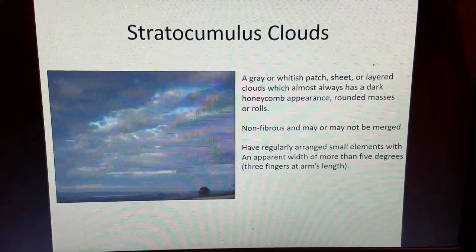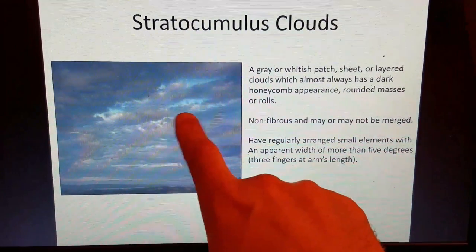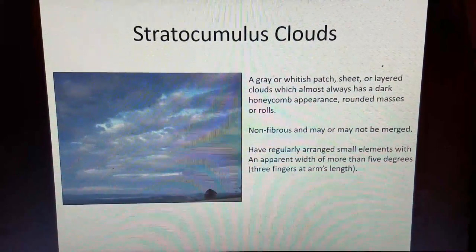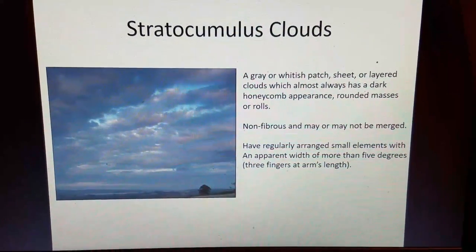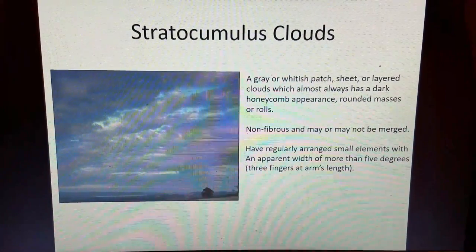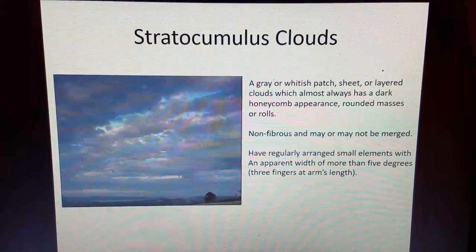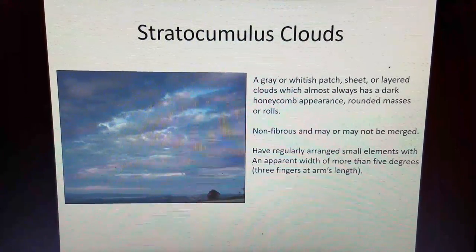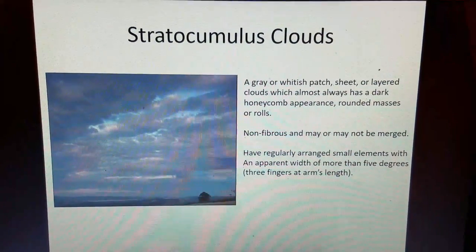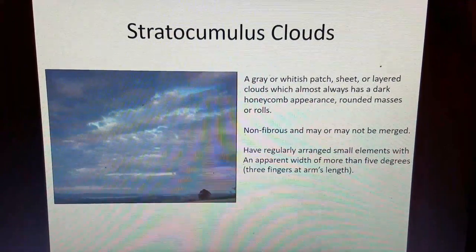Stratocumulus clouds are gray or whitish patch, sheet, or layer clouds which almost always have a dark honeycomb appearance — rounded masses or rolls, non-fibrous, and may or may not be merged. They have regularly arranged small elements with an apparent width of more than 5 degrees; if you put three fingers up at arm's length, that's generally how wide the elements are. Stratocumulus literally means layer-like, and cumulus means heap. These clouds occur a lot during the wintertime when you get very cold air moving over a warmer surface.